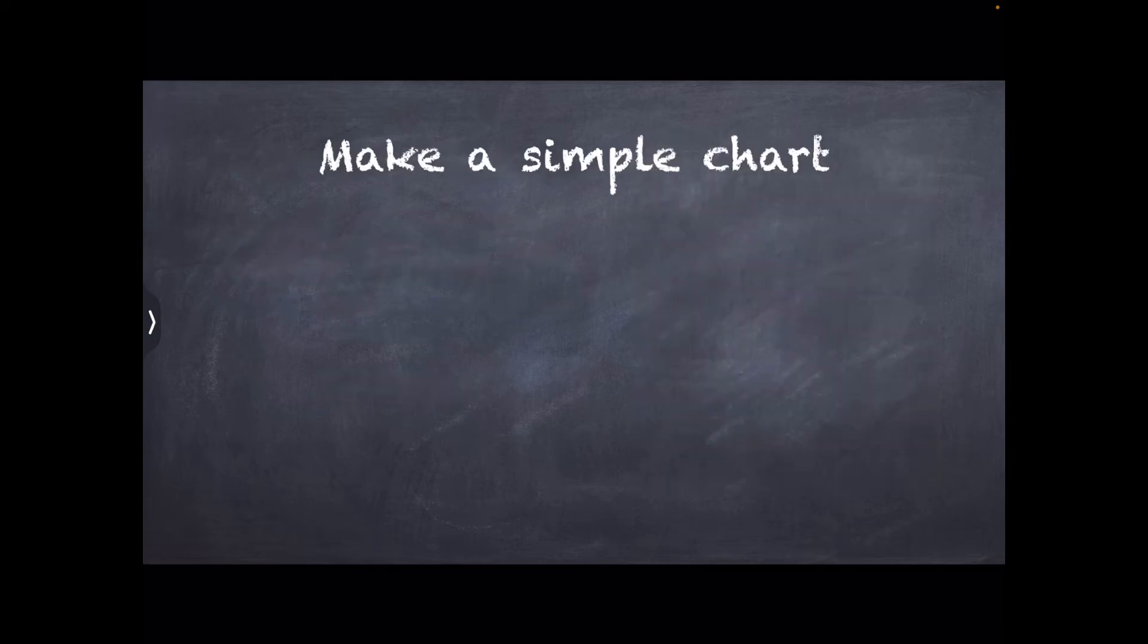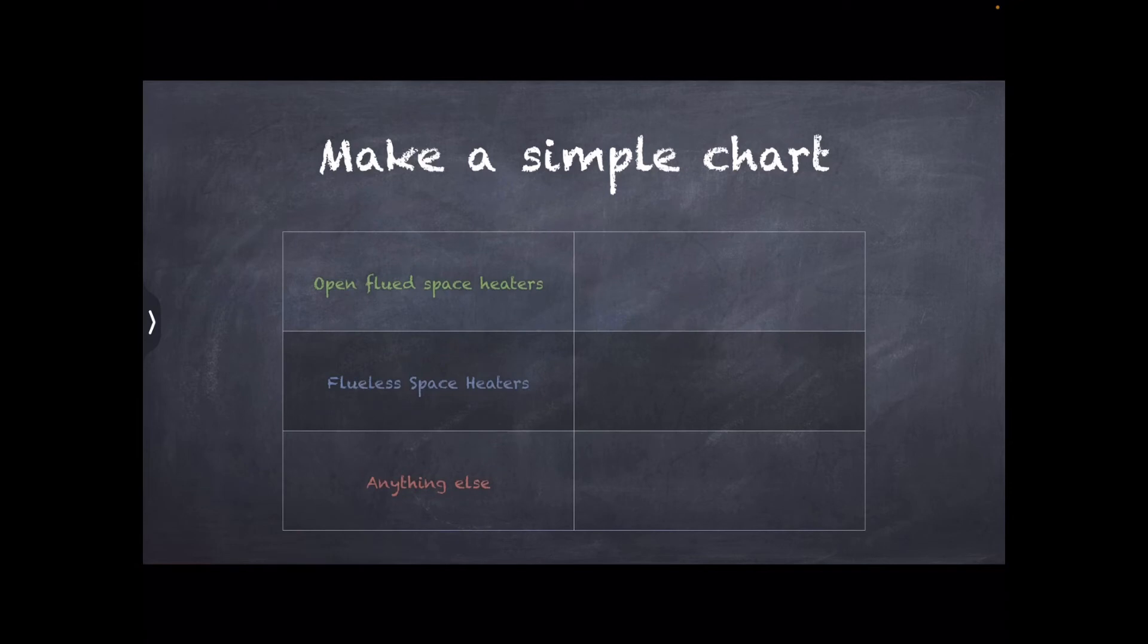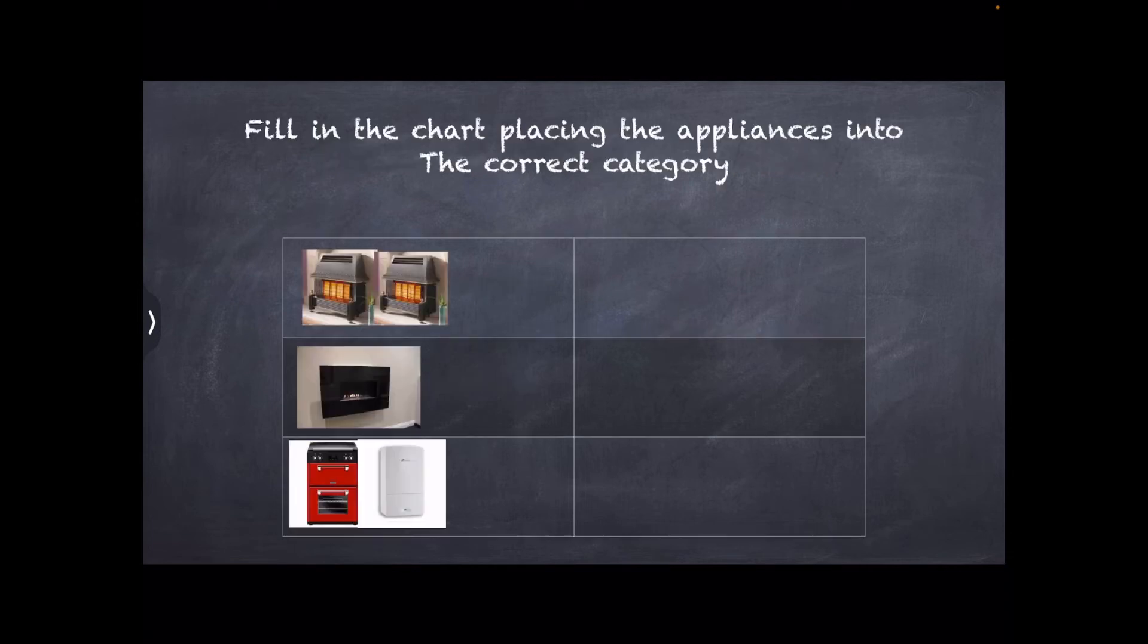First thing I always do is I make a simple chart. It's only six squares. The first three on the left hand side, you put in your different categories: the open flue space heater, flueless space heater, and anything else. Very simple. So let's do that.